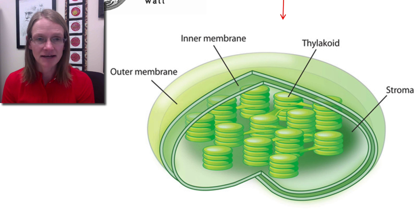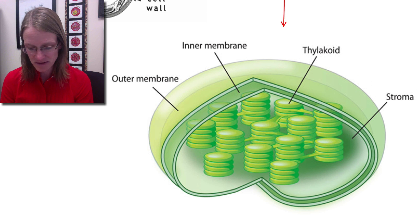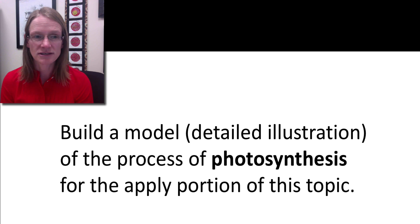What I'd like to have you do is watch this video. It talks in more detail about this process, the key enzymes and other factors that happen and where things happen. As you watch this, be sure to build a model of the process of photosynthesis—a detailed illustration that talks specifically about the inputs and outputs, where things are, and the key players in this process. You're going to need that for the apply portion of this topic.